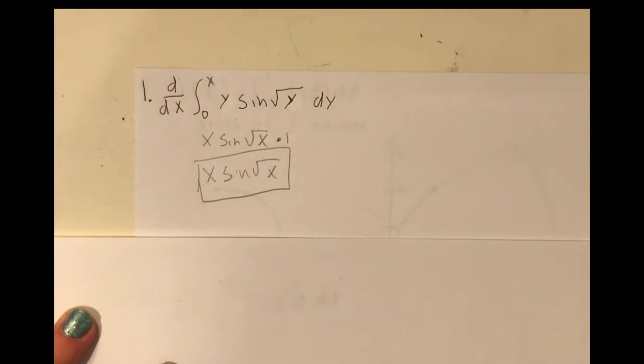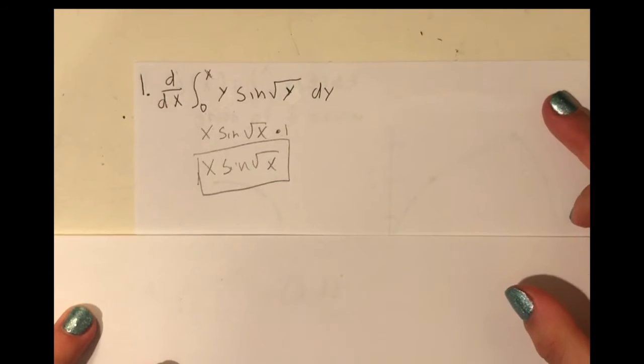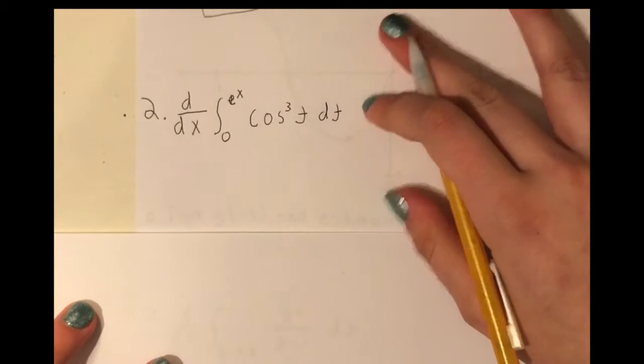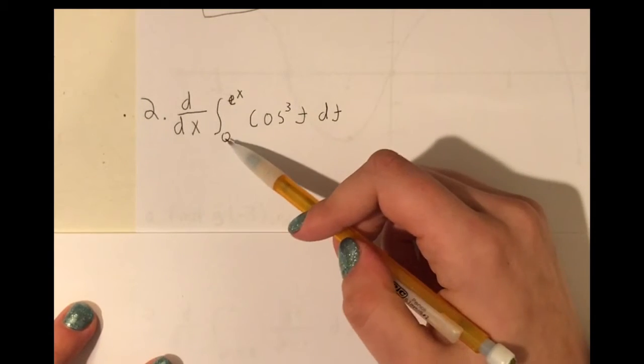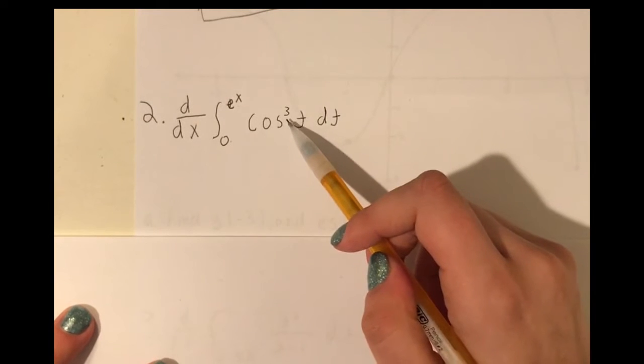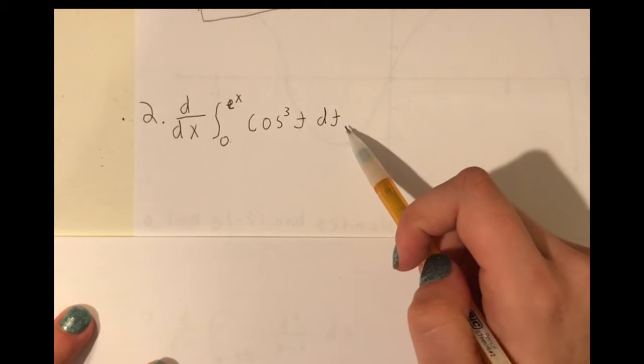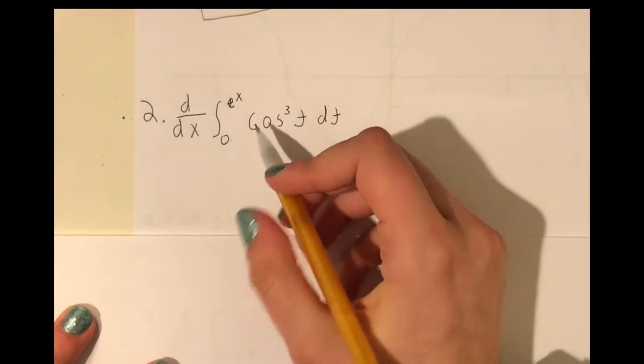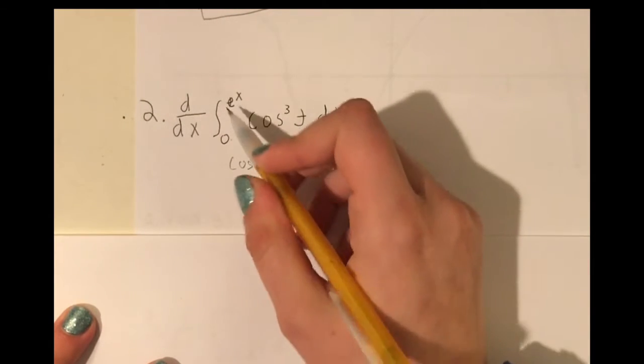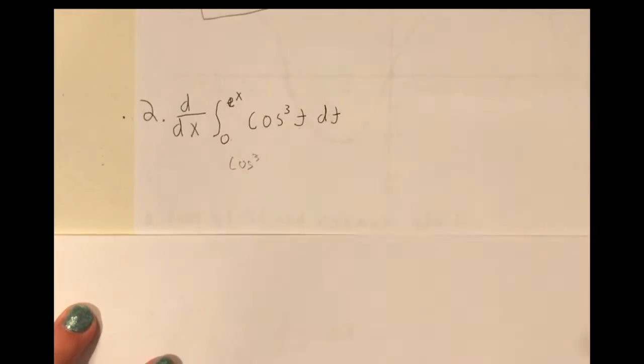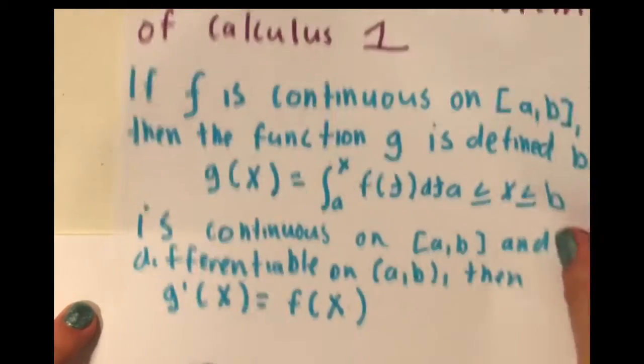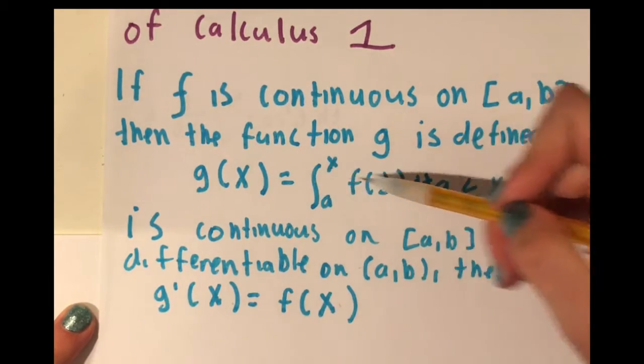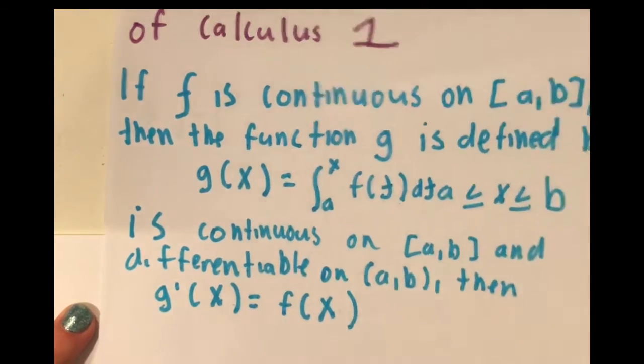Alright, that was a pretty basic problem. You should be able to do that in your sleep. It's pretty basic. Why don't we move on to a little bit, perhaps more complicated of a problem. So, we have derivative from the integral 0 to e to the x, cosine cubed of t, d of t. Now, let's just use the same basic thing we did last time. Cosine cubed. All we're doing is plugging this in. We're going back to that thing we talked about.